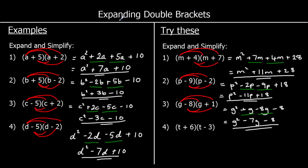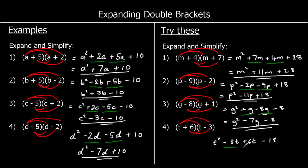Question 4: t times t is t squared. t times negative three is negative 3t. Six times t is 6t. And six times negative three is negative 18. Collecting the like terms: negative 3t plus 6t is 3t, so we've got t squared plus 3t minus 18.